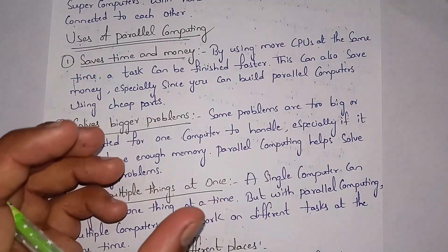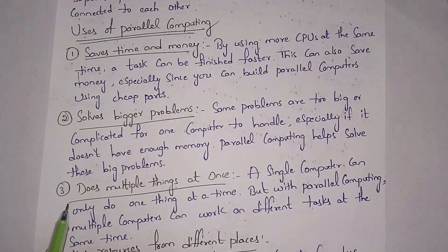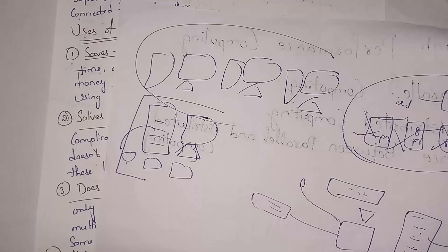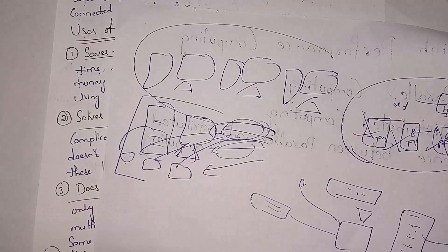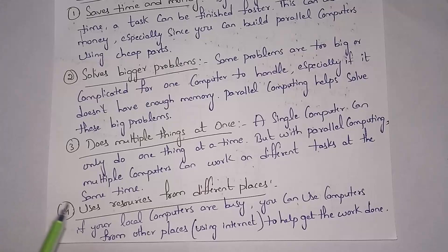Another advantage is solving bigger problems — large problems are shared among multiple processors. Also, parallel computing does multiple things at once: in serial computing only after completing the first task does it go to the second, whereas in parallel computing tasks are shared among multiple processors. Additionally, if our computer is busy we can also use other computers from different places via the internet.